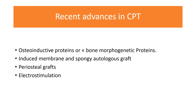Recent advances in congenital pseudarthrosis of the tibia include bone morphogenetic proteins — BMP-2 and BMP-7 — which are osteoinductive proteins used as an adjunct to other surgical treatments. Other recent advances include the induced membrane with spongy autologous graft technique, also known as the Masquelet technique, as well as periosteal graft and pulsed electrostimulation.